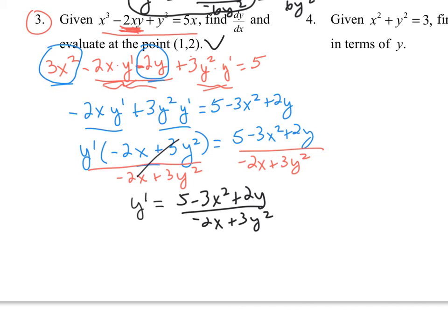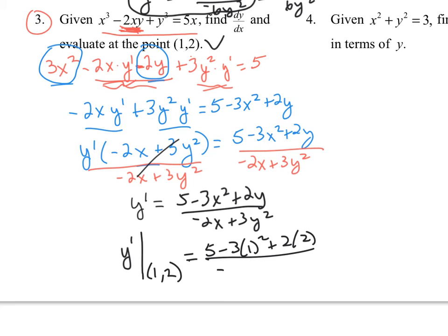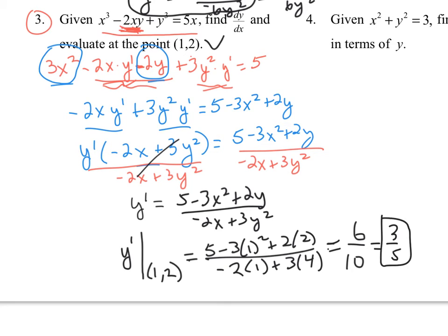The instructions ask for dy/dx — the slope of the tangent to this curve at the point (1, 2). Evaluating y prime at (1, 2): numerator is 5 minus 3(1) plus 4 equals 6; denominator is negative 2(1) plus 3(4) equals 10. So y prime equals 6 tenths, which equals 3 fifths. That's the slope of the tangent at that point. In class we'll look at graphs of this function using software or a calculator to see what the tangent line looks like.